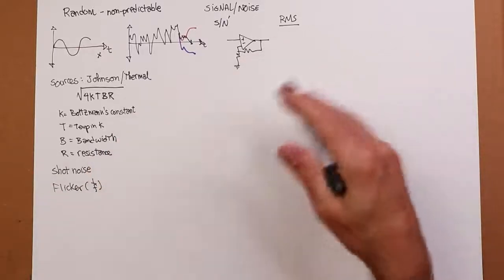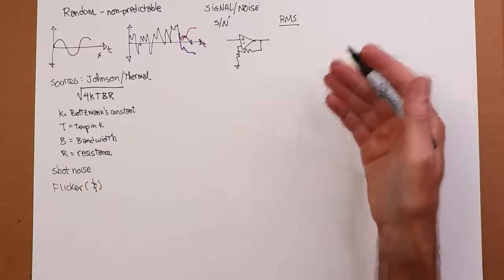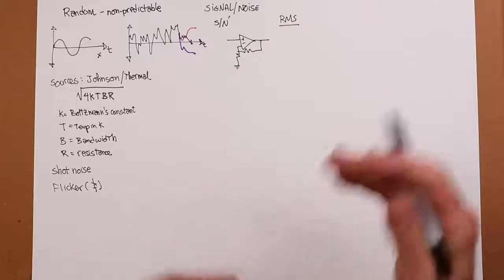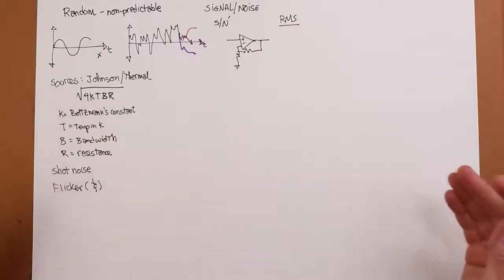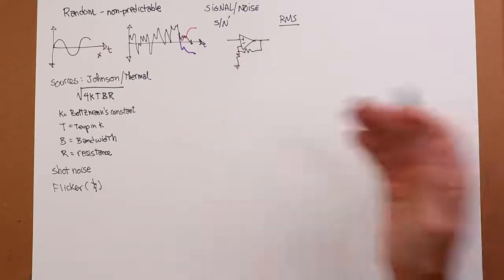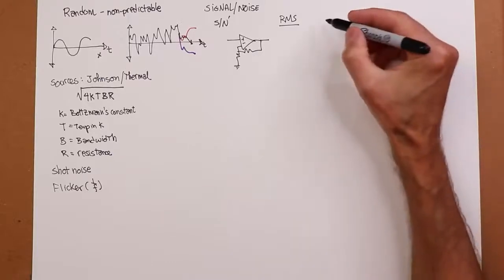That's sort of an unavoidable thing. So we always talk about the RMS value because ultimately that's what our ears or circuitry are going to respond to. Root mean square. We don't talk about peak noise voltage. And ultimately that's what we need to do as far as calculating powers and so forth.